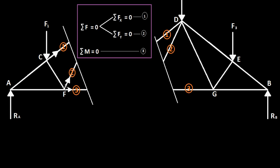If you take moment about a particular point, the moments of all forces passing through that point will be zero. The only moments will be for force F1, the reaction at A, and the force on member one. You can also take moment about another point — then certain forces drop out and you only have moments for the remaining force and the force through member two.